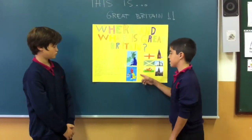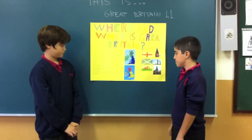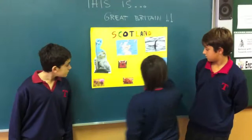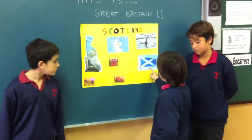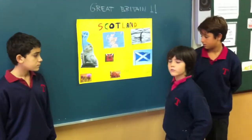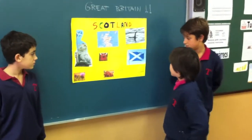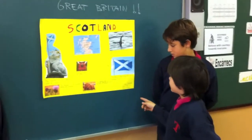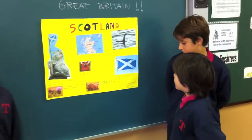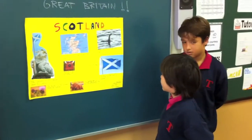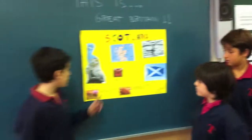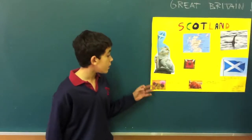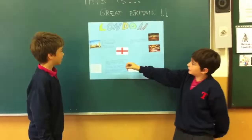Here in the middle of the bridge we have the most interesting things. Here are the flags of Scotland — that is the cross of Saint Andrew. Here there is a unicorn; it's the national animal of Scotland.